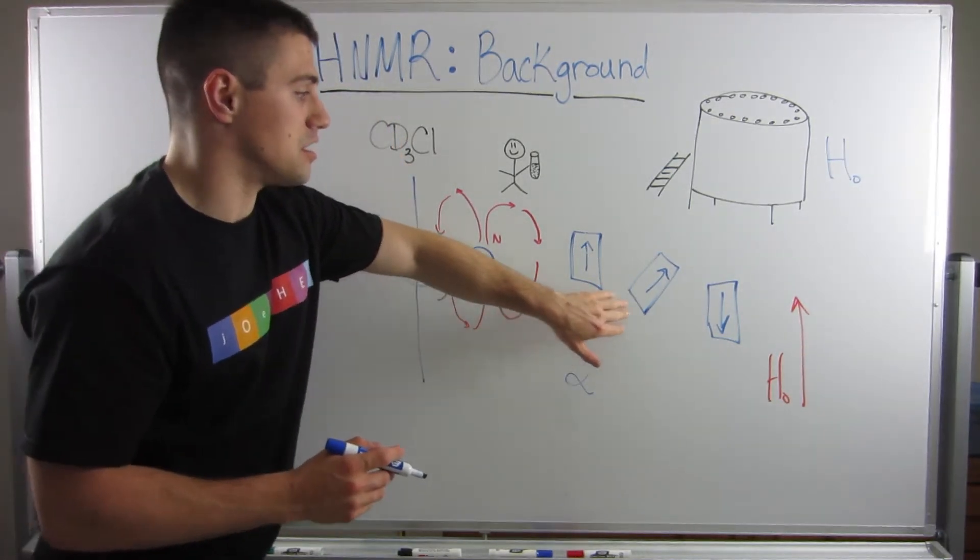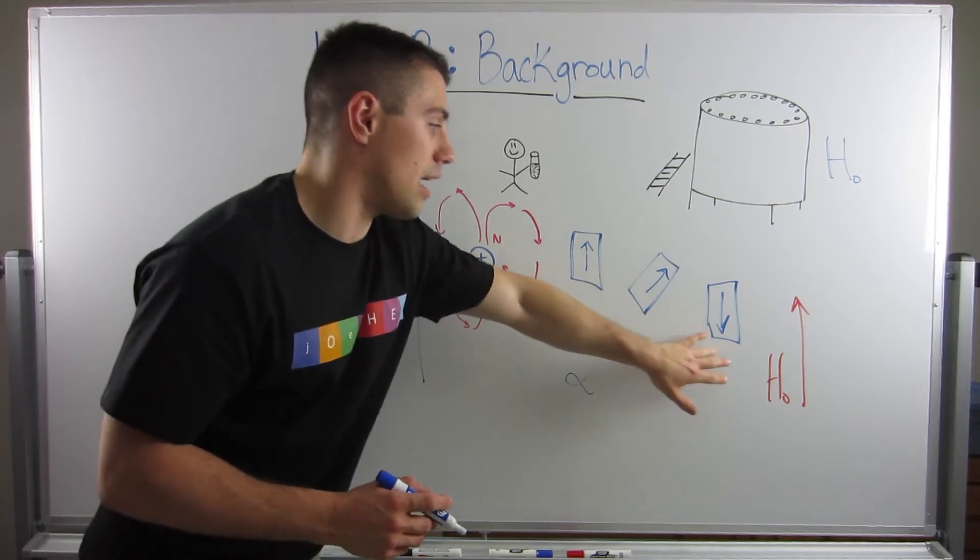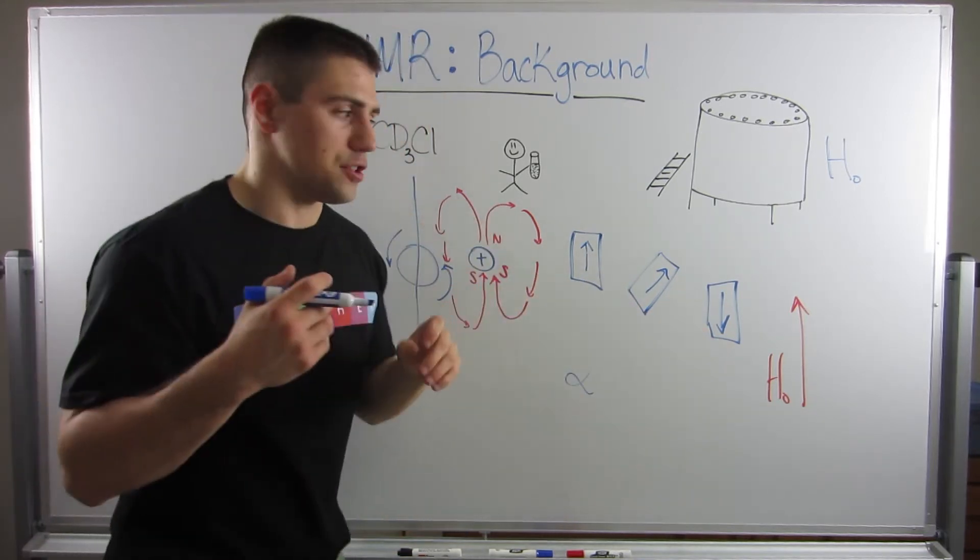It's going to gain an extra kind of spin where it will be designated by an alpha spin. So this specific hydrogen nuclei, these are individual hydrogen nuclei, will get excited. It's going to gain energy.